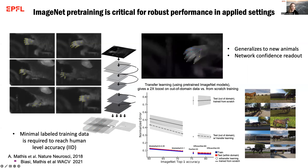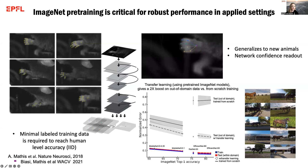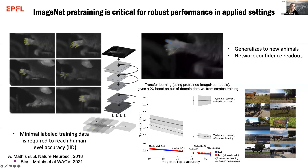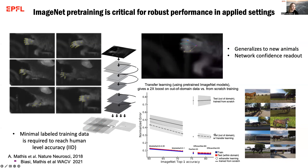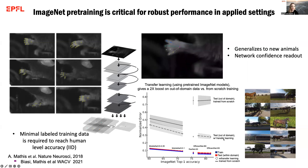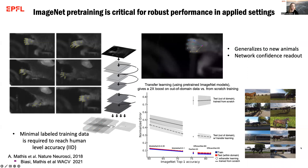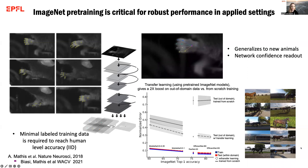What you're seeing here on the bottom right is an example from across a series of architectures that themselves have different performance on the ImageNet benchmark — EfficientNet being the best — versus training from scratch. By using these weights, we showed that on our downstream pose estimation task, specifically the HORSE10 benchmark, these really outperformed training from scratch.